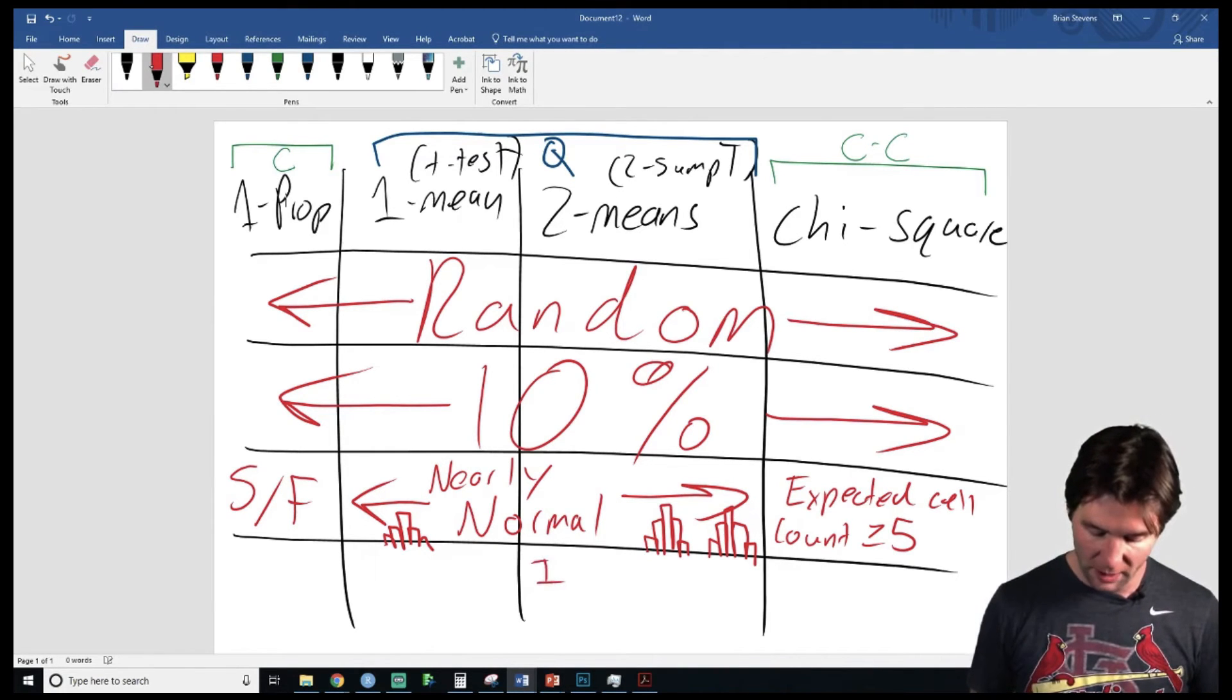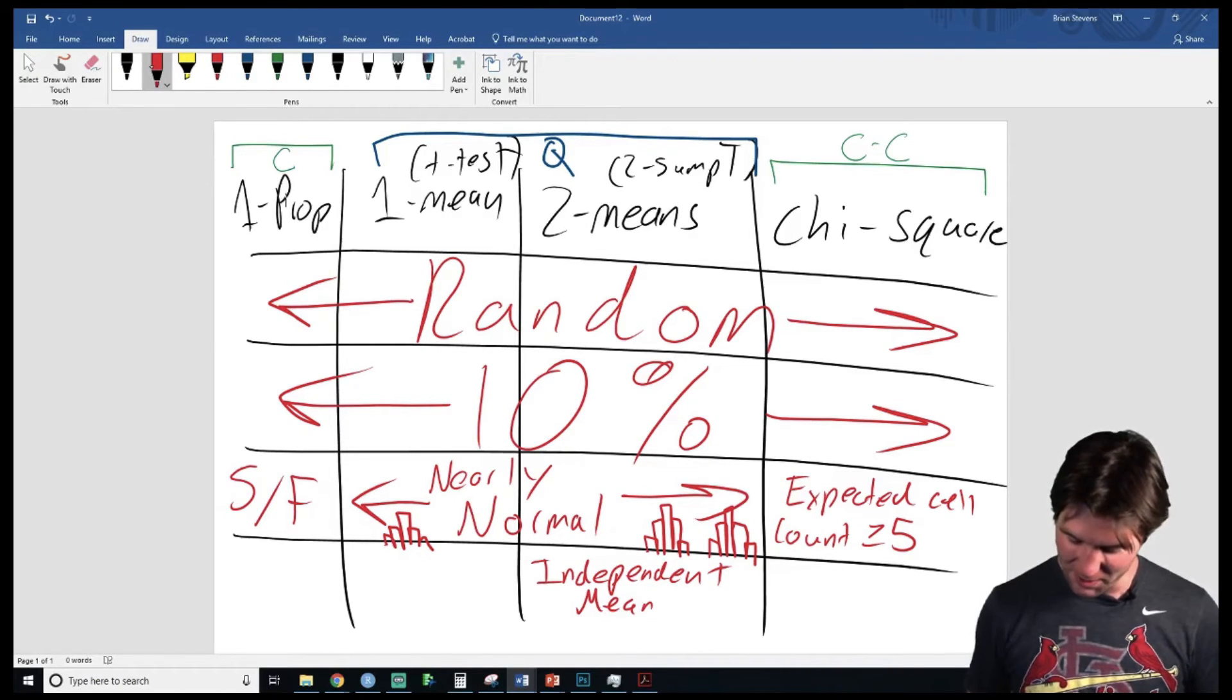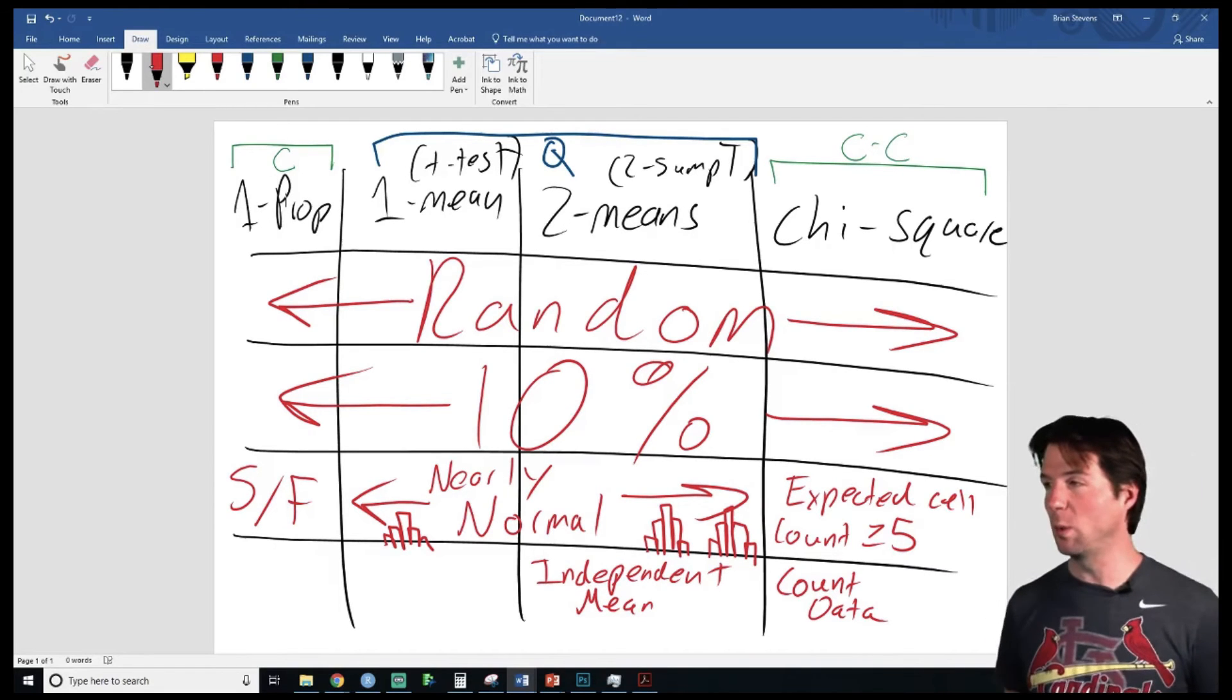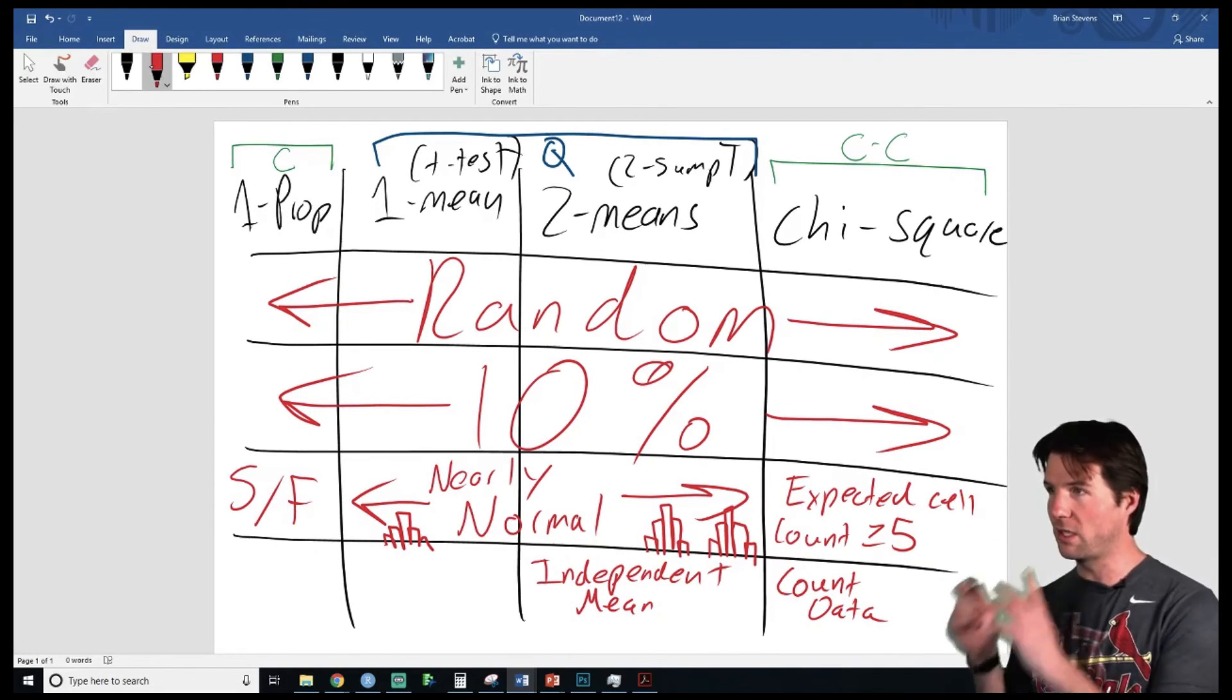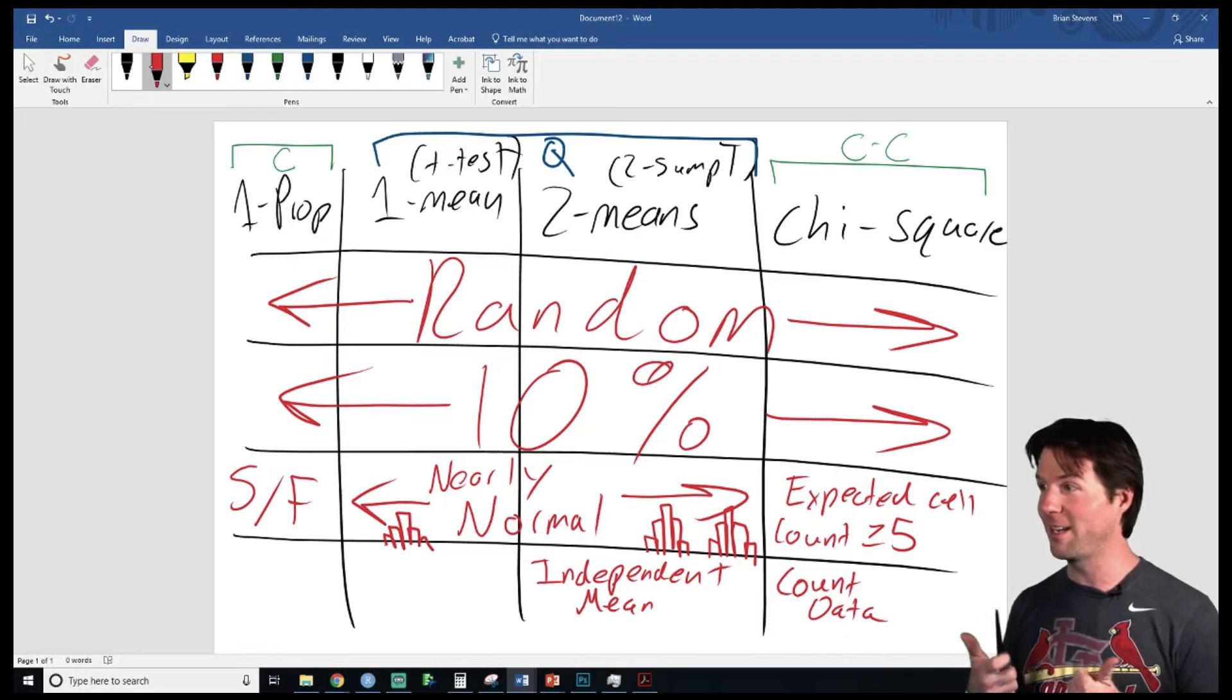The fourth condition here will be independent means. The bright lights zap your memory. Independent means, independent means. And this is count data. I figure this is a good place to review what's going on right here, to make sure you see all the conditions in my glorious handwriting - best I can do.